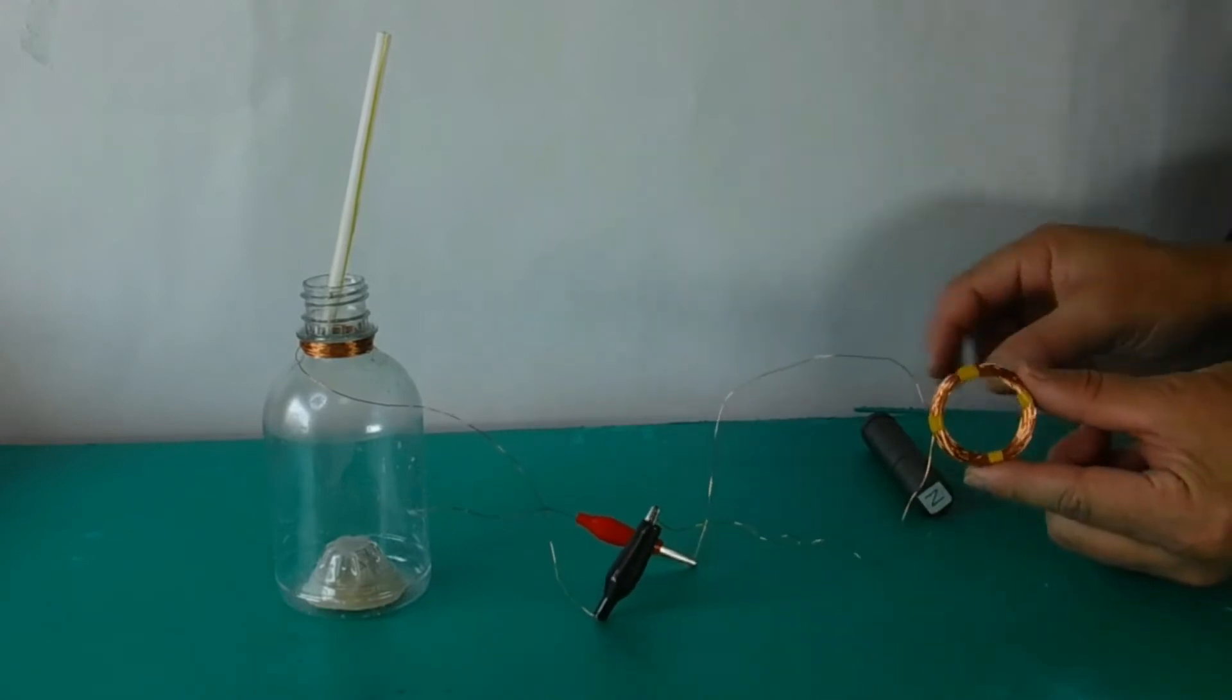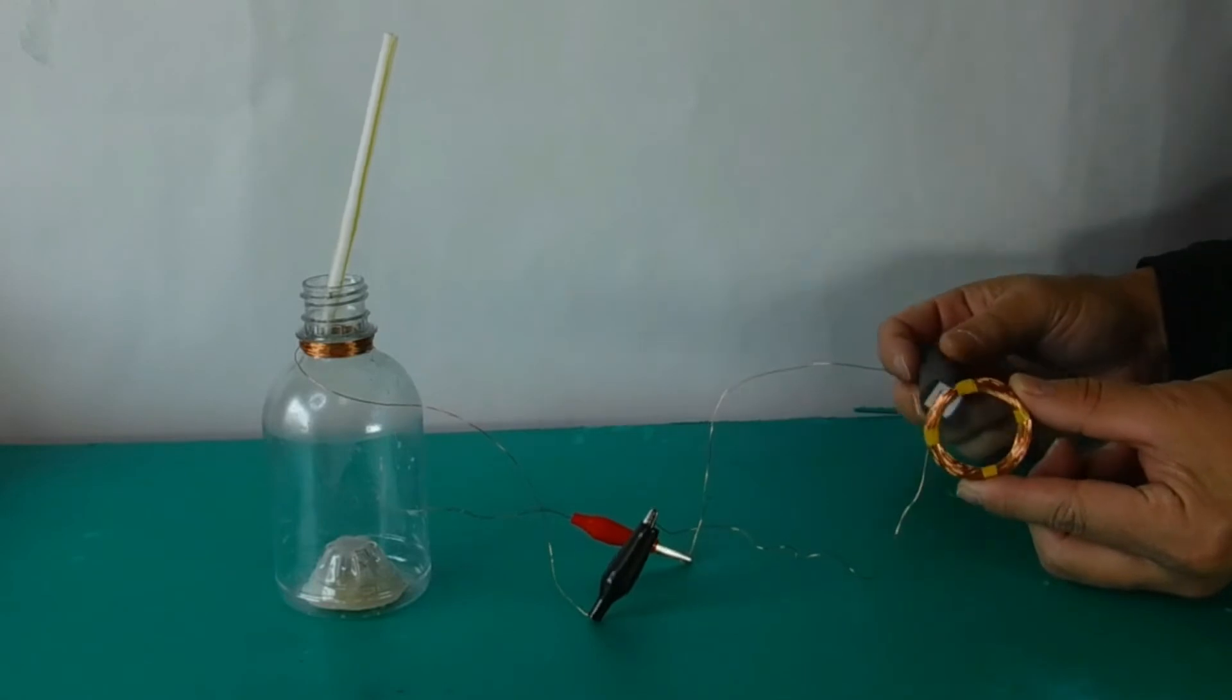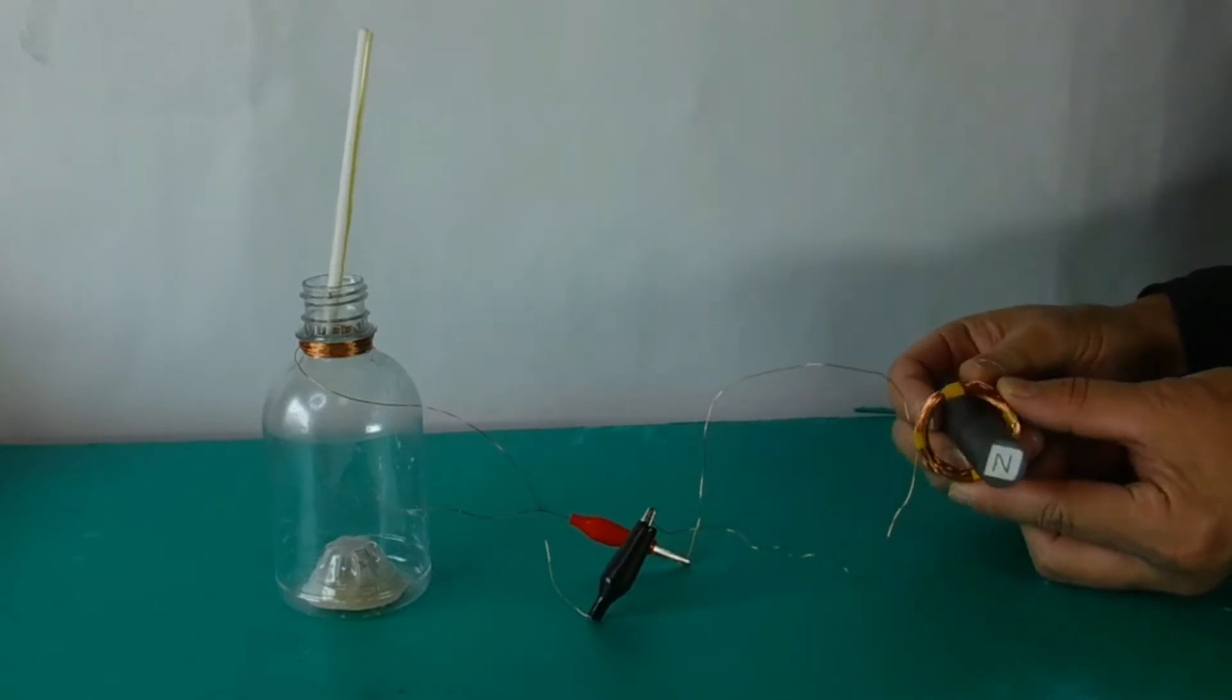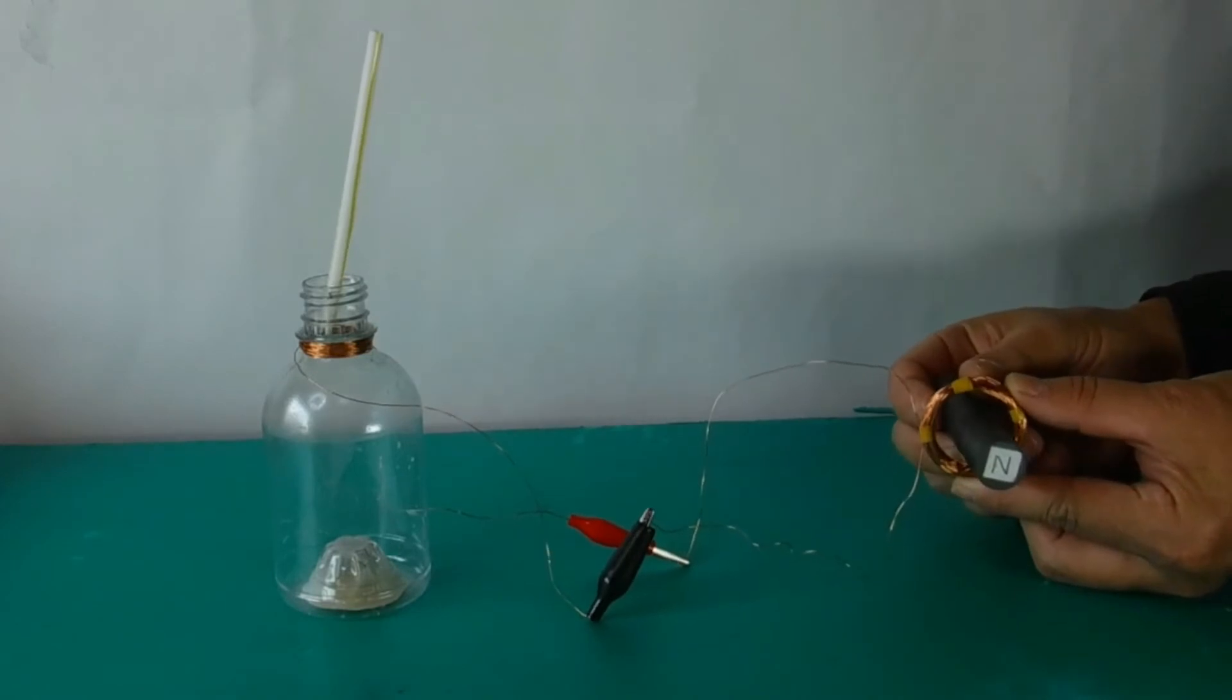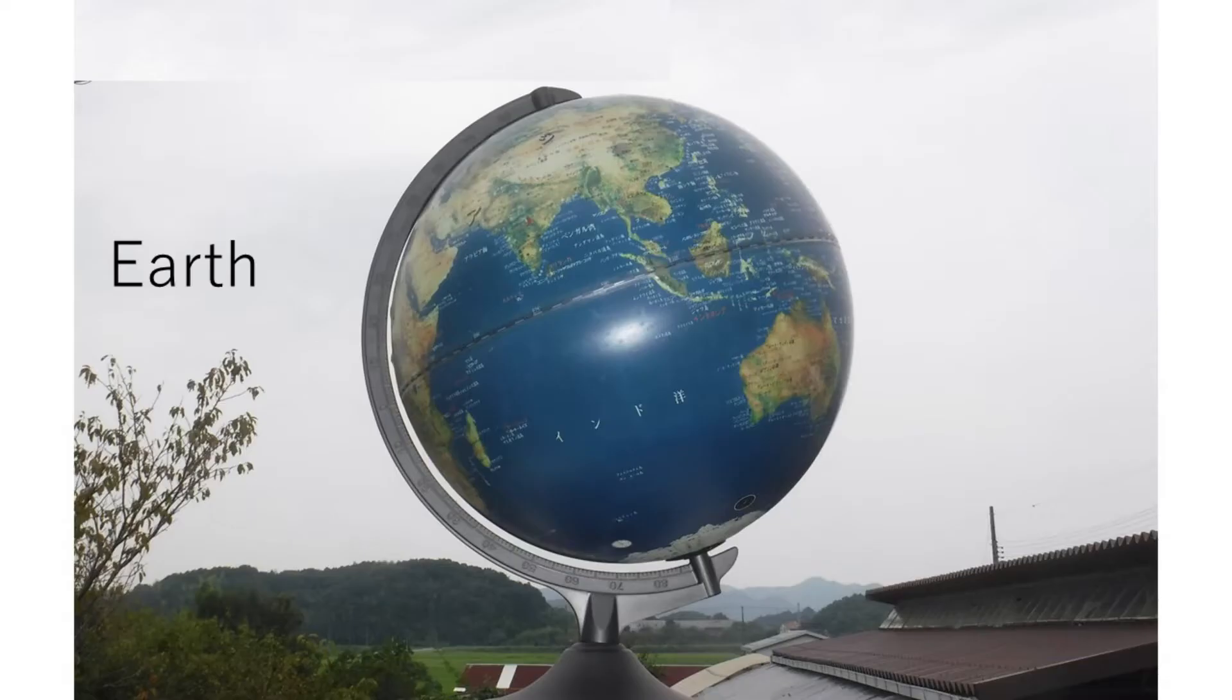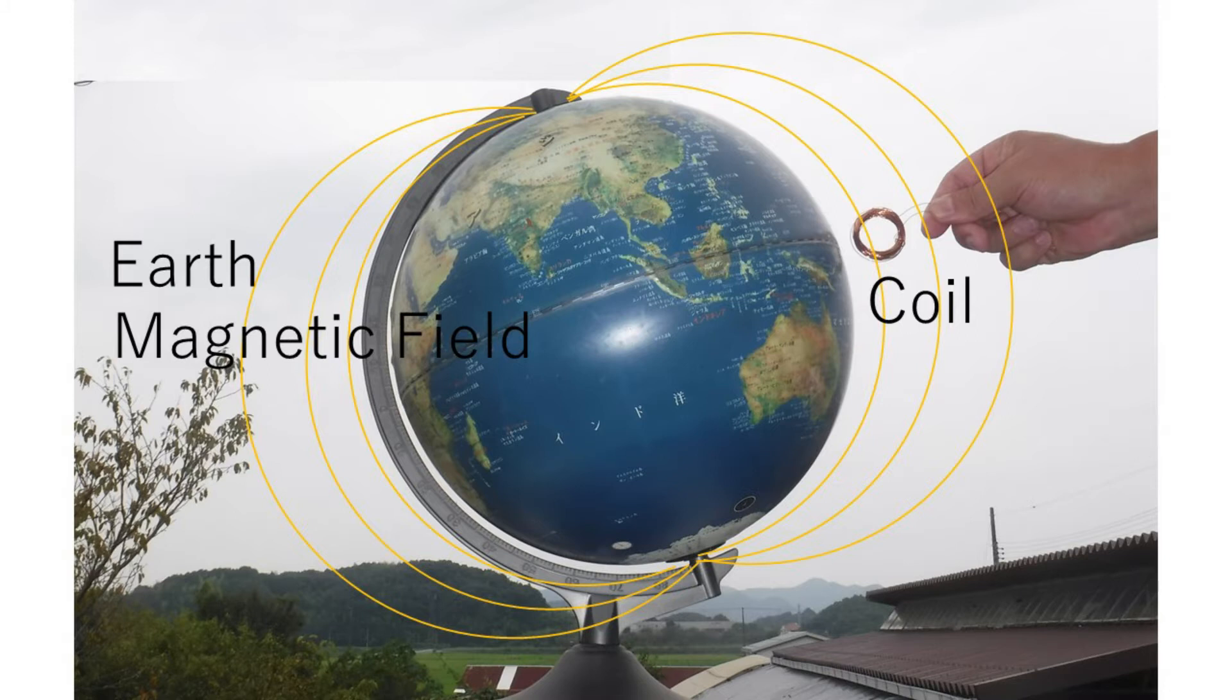Inductive current is generated by magnets and coils. The earth has a magnetic field and it is a big magnet. Inductive current is generated when a big coil is moved on the ground surface.